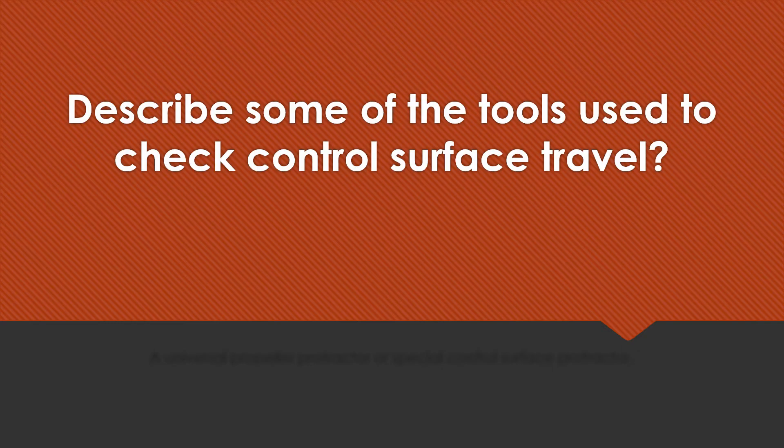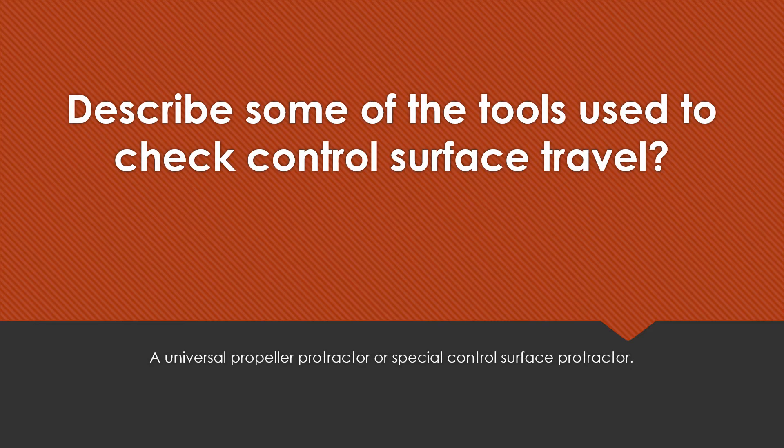Describe some of the tools used to check control surface travel. A universal propeller protractor or special control surface protractor would be used.